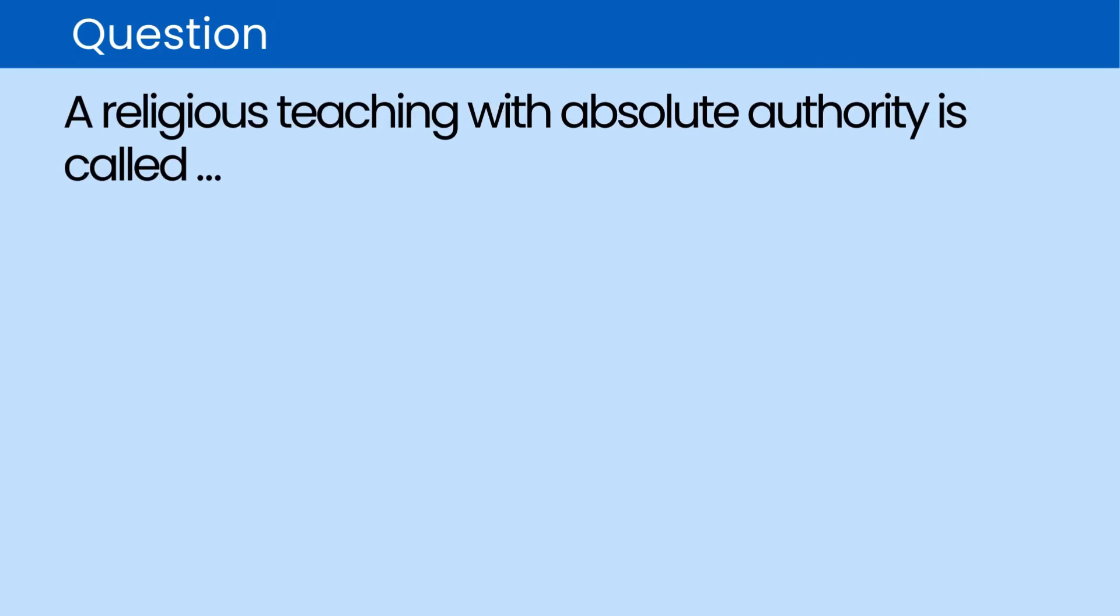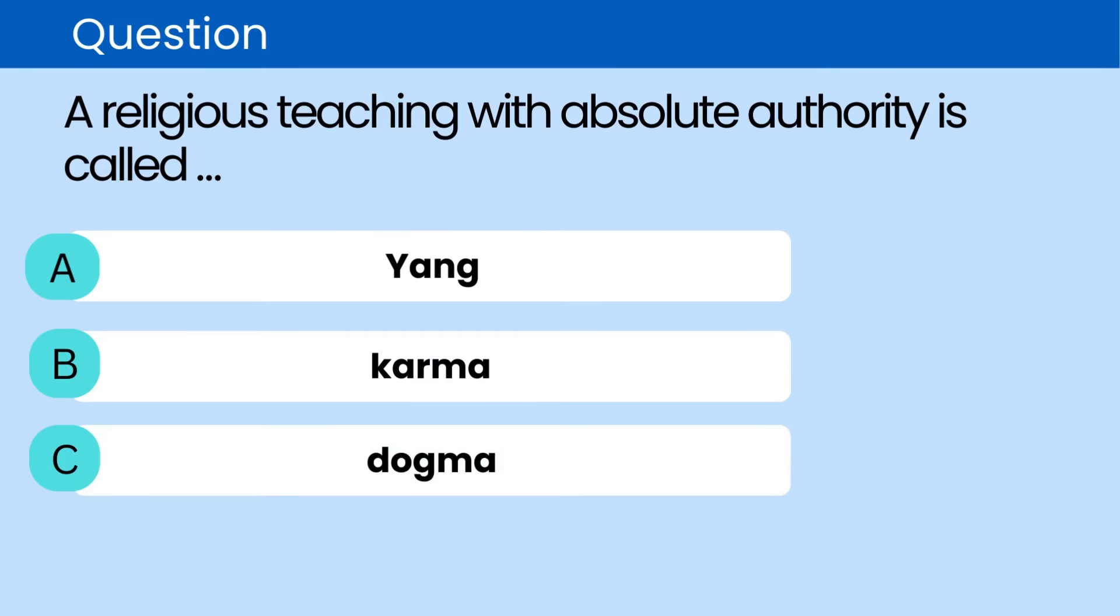Question: A religious teaching with absolute authority is called. A. Yang. B. Karma. C. Dogma. D. Caliph. The correct answer is C. Dogma.